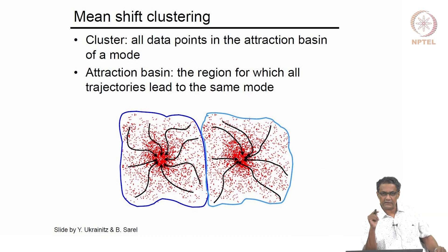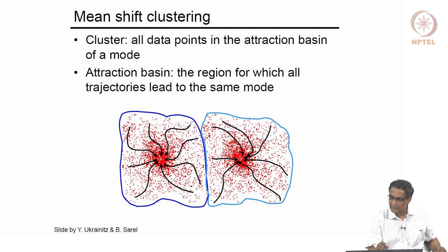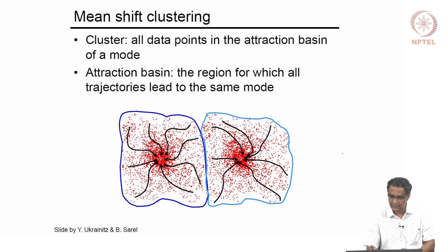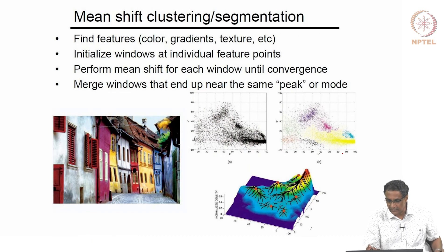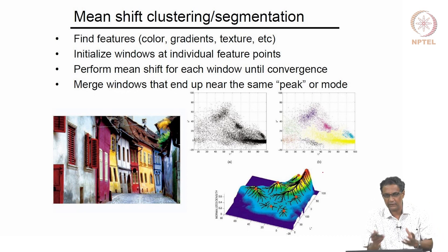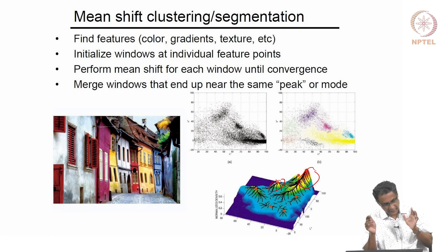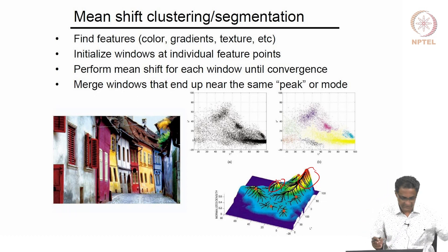If you have a cluster and pick any point, the mean shift path will traverse from there to the same mode. All points belonging to one cluster will come together, seeking the maximum of the basin. You can think of a PDF as a terrain — a PDF is responsible for generating those samples, and the algorithm seeks the mode of that PDF.